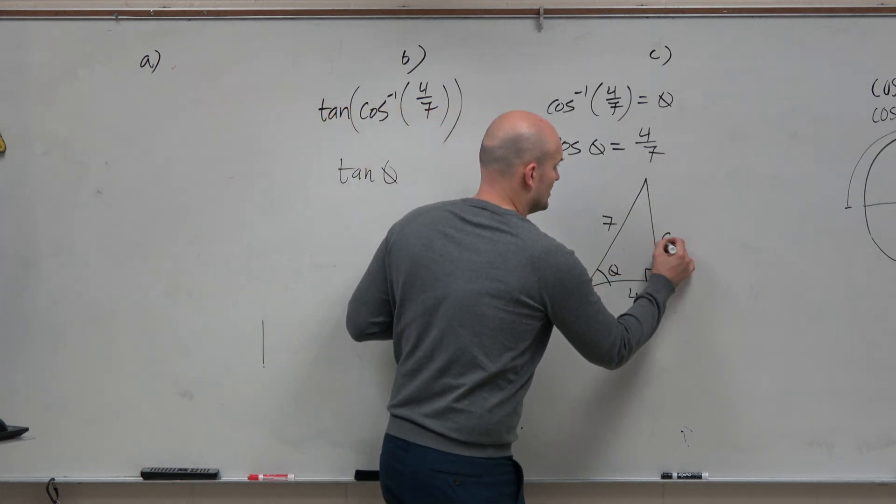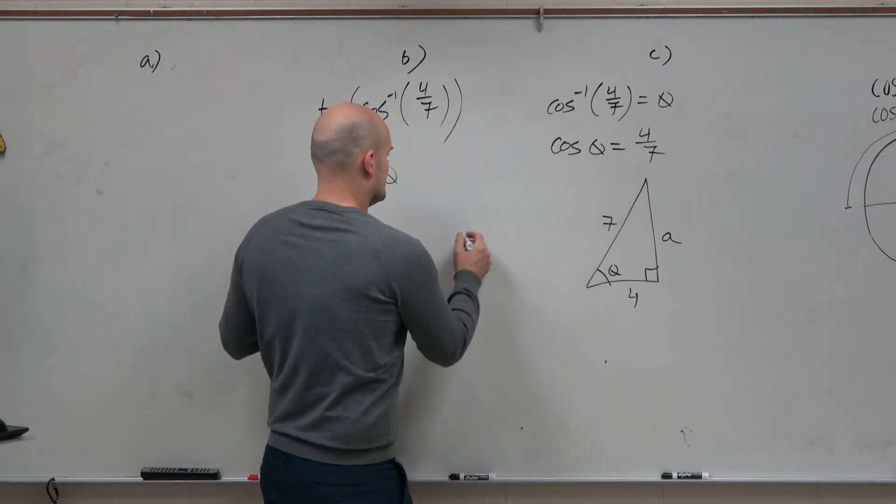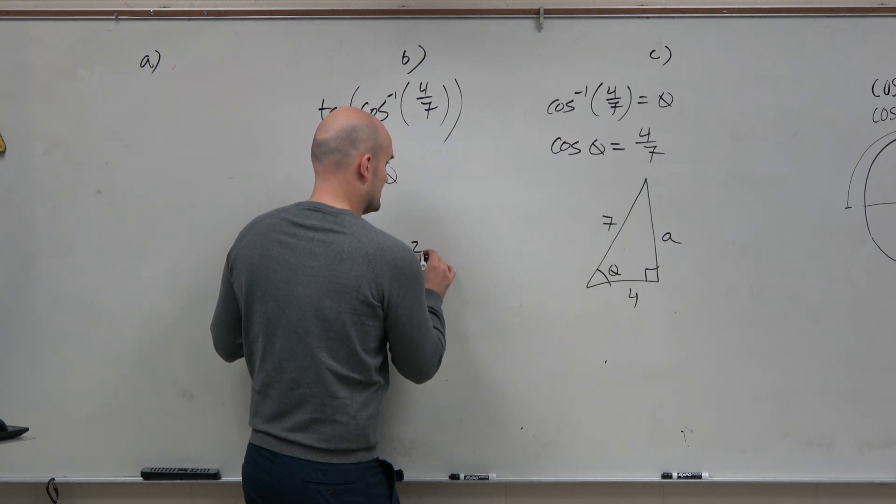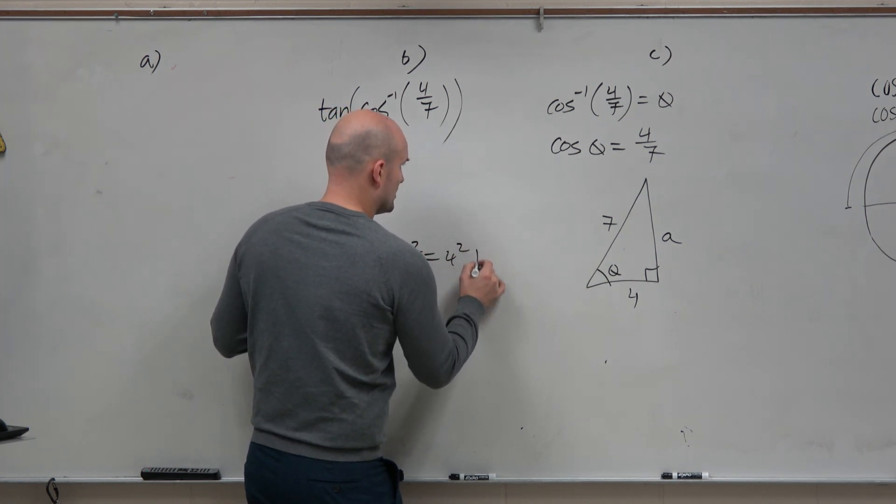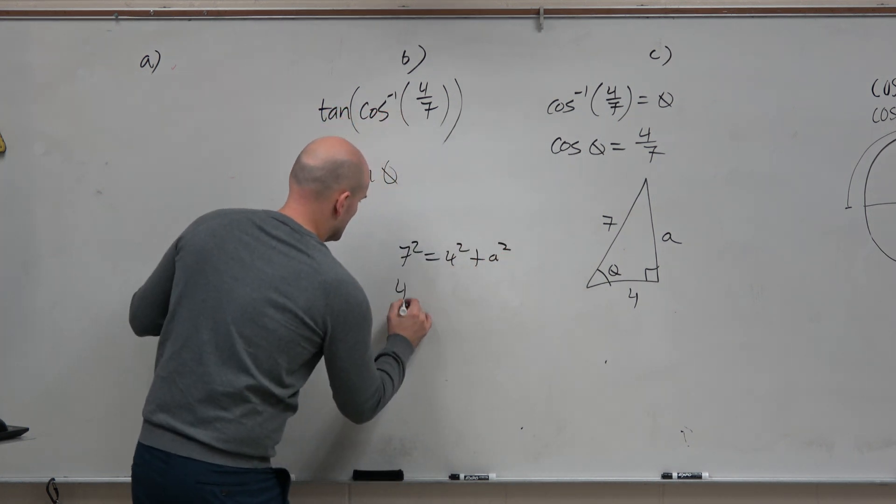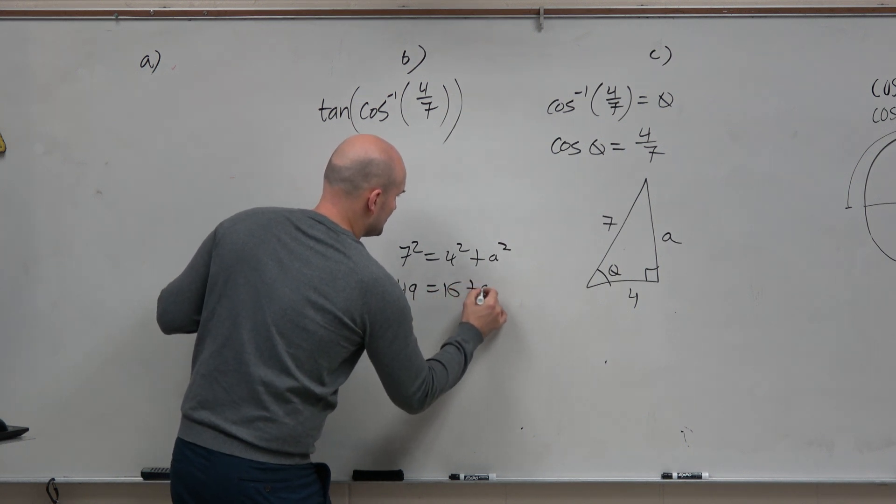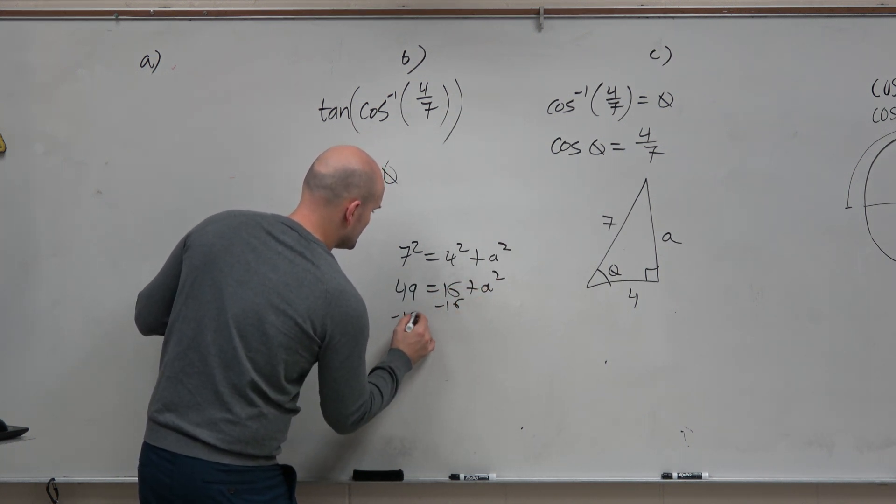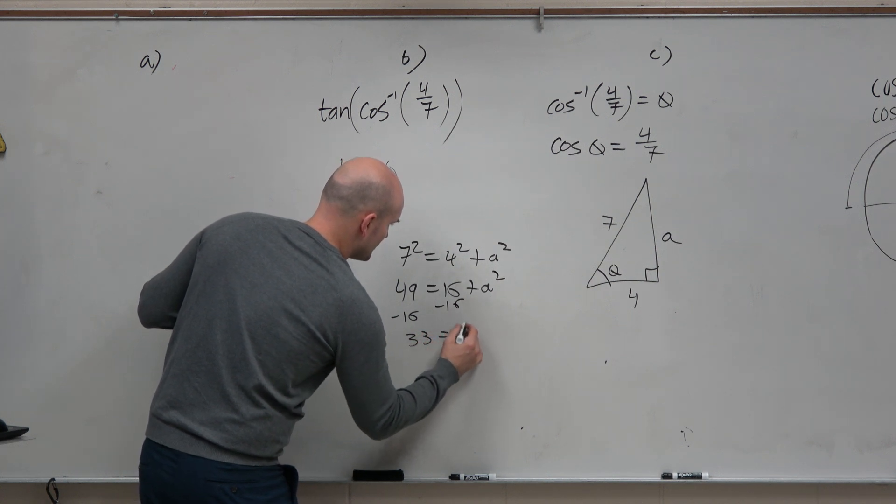Sure, we just got to figure out what is that missing side. So we say, all right, well, 7 squared equals 4 squared plus a squared. 49 equals 16 plus a squared. Subtract 16. 33 equals a squared.